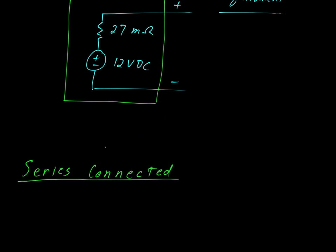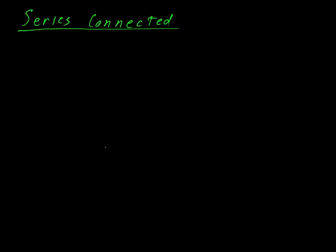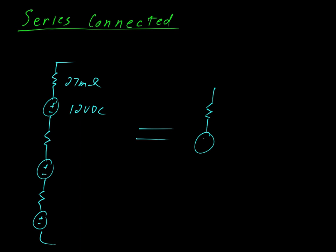And with that we have an ideal voltage source connected in series with a resistor. So with this in mind we can now explore what it means to connect batteries in series and parallel. So let's say you needed a 36 volt power supply. You could connect three batteries in series like so. Where each resistor here is 27 milliohms, and each ideal voltage source is 12 volts DC.